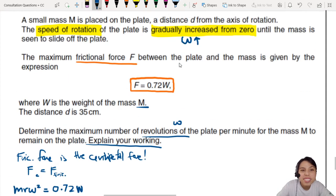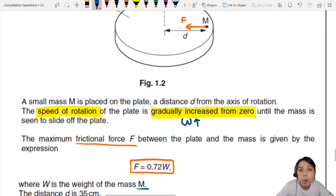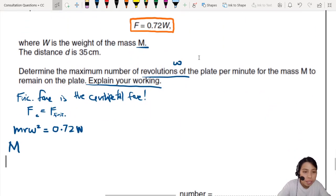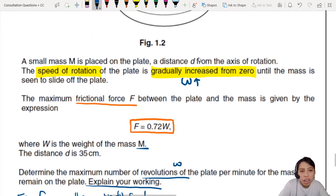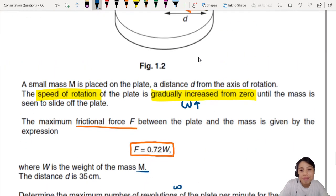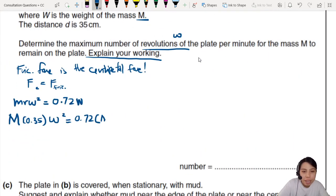This is an expression for centripetal force, goes to frictional force. Given to us as 0.72 times W. Let's substitute all the information. We know M is big M. What's the radius? Distance d, which is 0.35. Omega we're trying to find. 0.72 times Mg, M times 9.81.